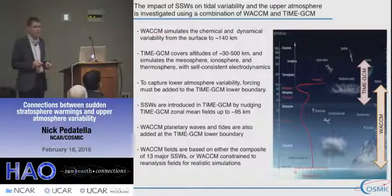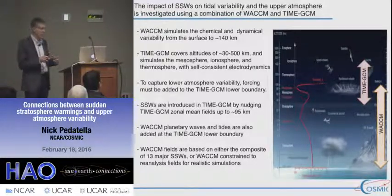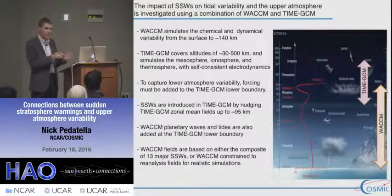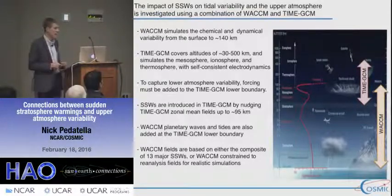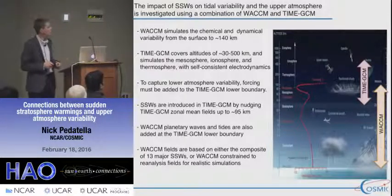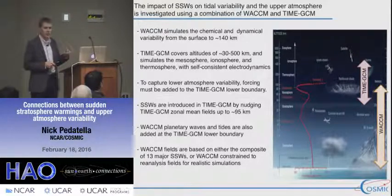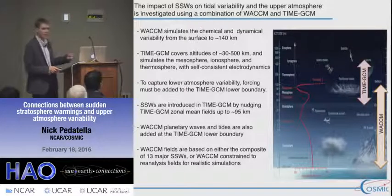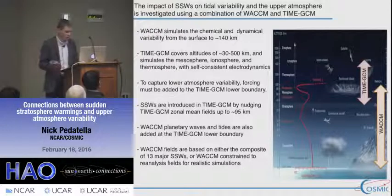We run the model and it can self-consistently generate sudden stratospheric warmings. We use those as a baseline and put them together in a composite to create an average picture of what a sudden stratospheric warming looks like in terms of zonal mean, tidal, and planetary wave perturbations. I will also show more realistic simulations where the WACCM fields in the lower atmosphere are constrained based on a reanalysis field to check how well the model reproduces real observations.